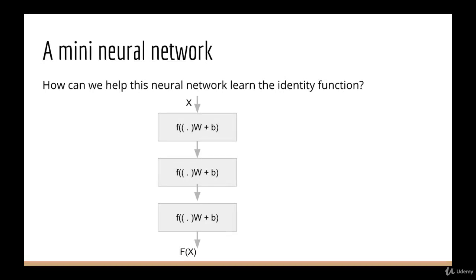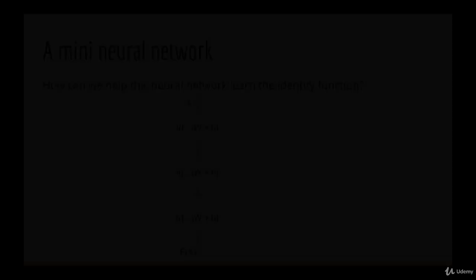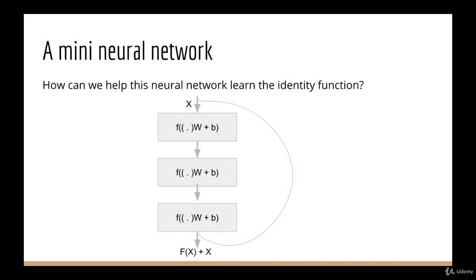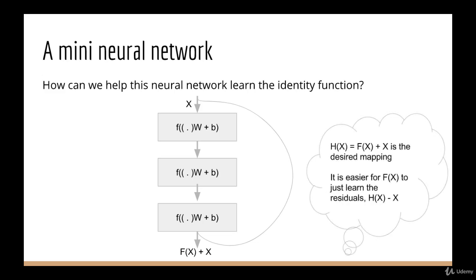So let's say we have this mini neural network. It cannot learn the identity function. What's one way we could help it learn the identity function? Well that's just to pass the input directly to the output. So we draw this extra line here that bypasses all of the intermediate layers. So if my final expression is f(x) + x, then to get identity, I just have to learn that f(x) should always give me 0. The intuition researchers had was that it should be a lot easier for the neural network to learn that f(x) should output 0 than to output whatever other function was required.